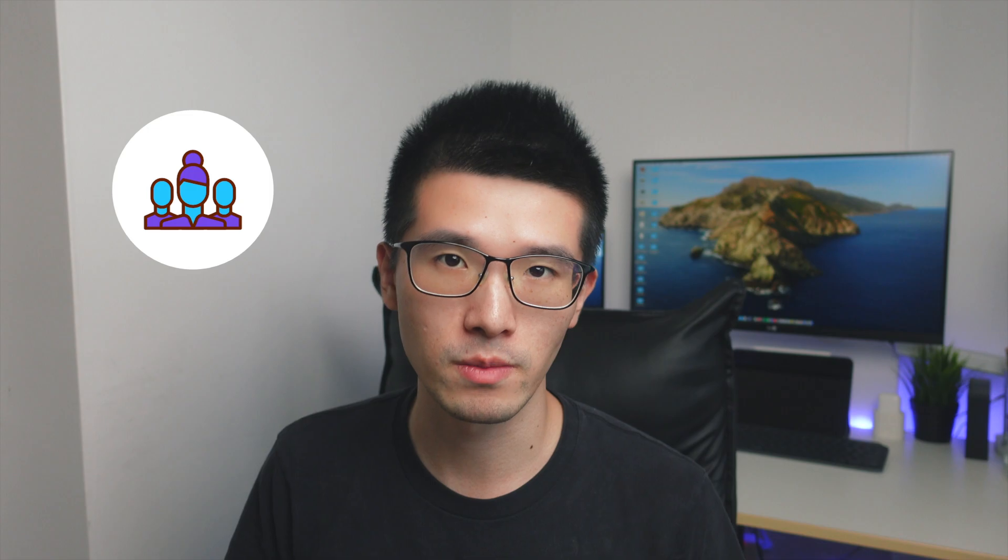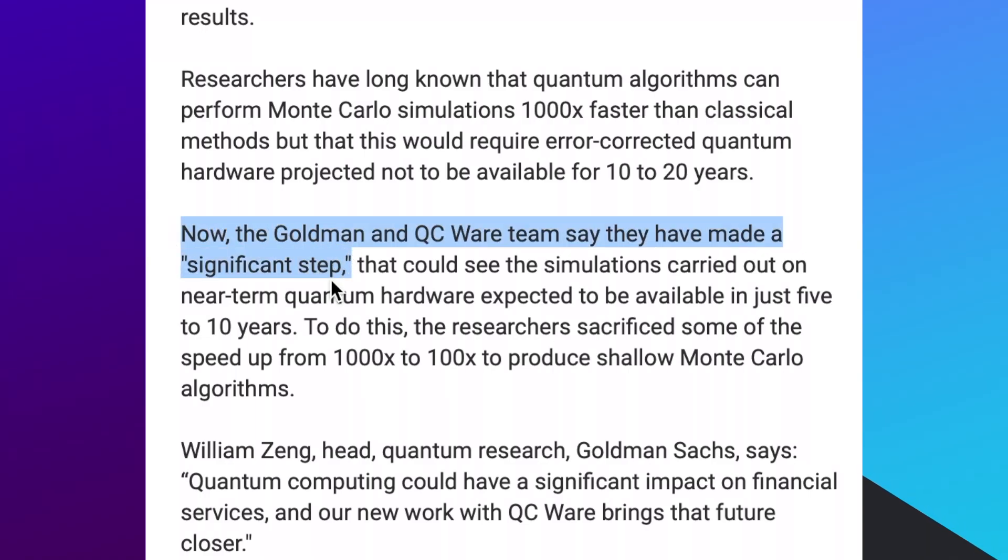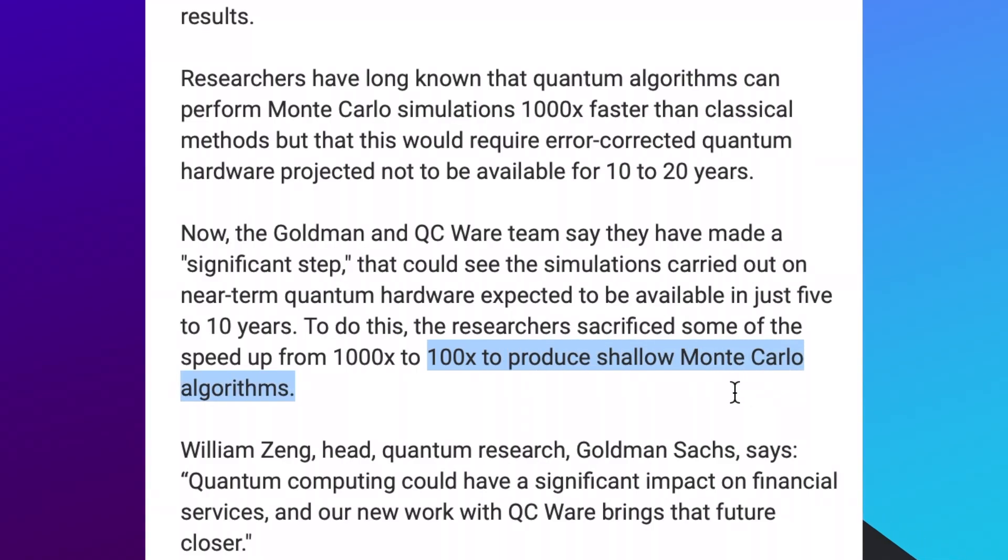That is quantum computer. In terms of this new technology, the world leading financial institutions like JP Morgan and Goldman Sachs found this huge potential to apply to their financial services, such as risk analysis and derivative pricing. Because these two are super important in financial business, and they're both based on the Monte Carlo method. JP Morgan and Goldman Sachs both have their dedicated teams to build the quantum algorithms, which can boost up the Monte Carlo simulation. And Goldman Sachs claimed that they collaborated with quantum software company QC Ware and developed something called shallow Monte Carlo algorithms, which can speed up the Monte Carlo simulation to 100 times faster on a future quantum computer in 5 years. It's like within the near future, quantum computers are good enough to be used in real life cases. But why do they have to wait for another 5 years to implement their shallow Monte Carlo algorithms?